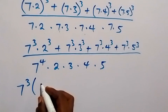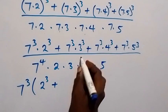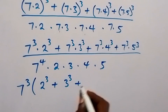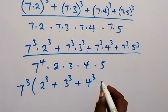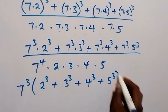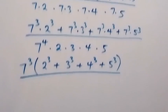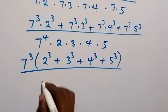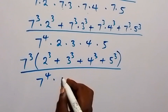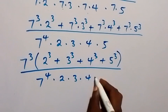So let's bring 7 cubed out and this will be: 7 cubed times bracket — we have 2 cubed plus 3 cubed plus 4 cubed plus 5 cubed — then divided by 7 raised to power 4, times 2, times 3, times 4, times 5.